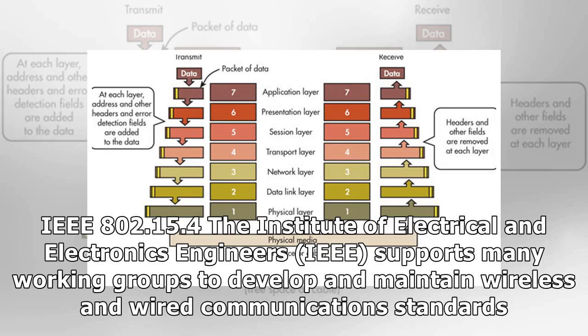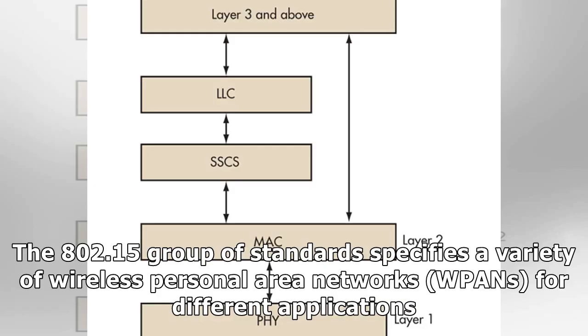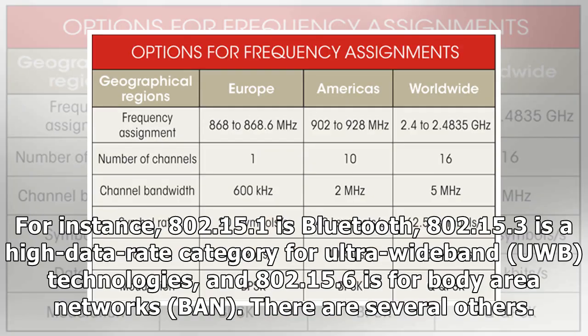The Institute of Electrical and Electronics Engineers (IEEE) supports many working groups to develop and maintain wireless and wired communication standards. For example, 802.3 is wired Ethernet and 802.11 is for wireless LANs (WLANs), also known as Wi-Fi. The 802.15 group of standards specifies a variety of wireless personal area networks (WPANs) for different applications.